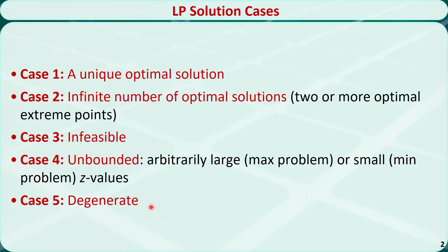When we use the simplex method to solve these linear programming problems, we may notice some special patterns in the simplex tableau. It should be noted that the examples shown in this video are all maximization problems. For a minimization problem, we can convert it into a maximization problem by maximizing the opposite of the objective function.